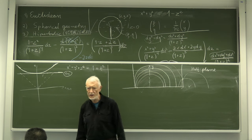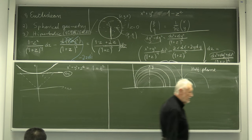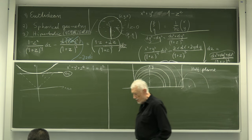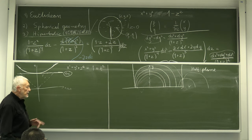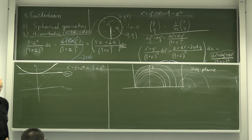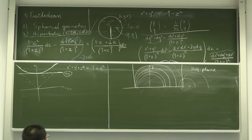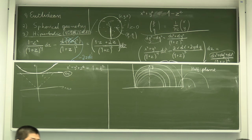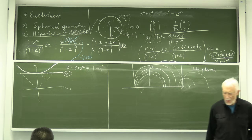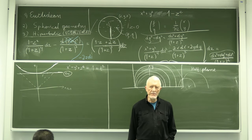In spherical geometry there are no parallel lines, whereas in hyperbolic geometry there are too many parallel lines. I will stop here and come back to analyze carefully the geometry of the mass shell. Now I pass to the next item of my talk: the wave equations.